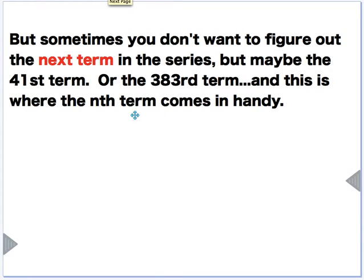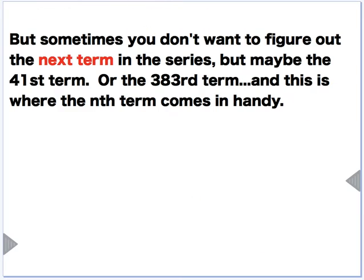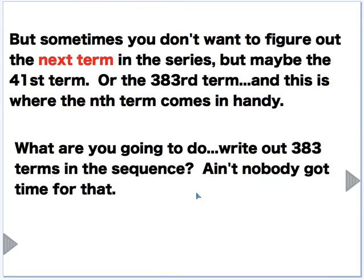But sometimes you don't want to figure out the next term in the series. Maybe you want like the 41st term or the 383rd term. In this sequence, it's really easy. I can say the 41st term is going to be 41. In this series, the 41st term, that's a little harder to do. You could actually write out 383 terms in the series, but nobody's got time for that. Like that takes forever.